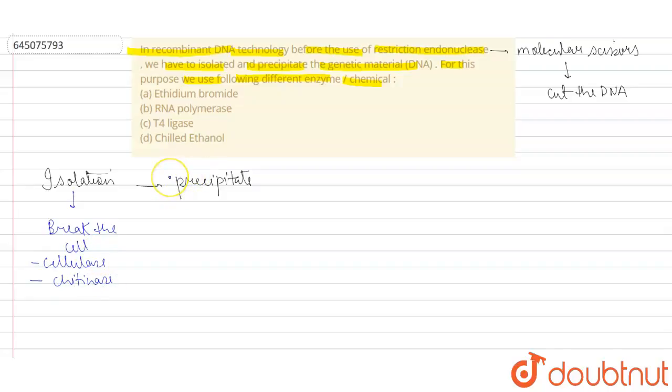After the process of isolation, when the DNA is free, then the DNA is being precipitated with the use of a chemical which is known as chilled ethanol. Chilled ethanol basically helps in the precipitation.